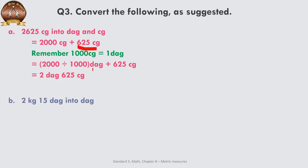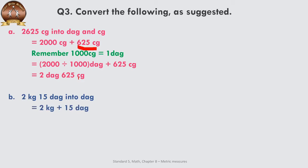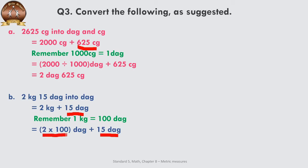Question 2: 2 kg 15 decagrams has to be converted into only decagrams. Kilogram is a bigger unit — bigger unit to smaller unit, we multiply. When we have two different units in one question, we separate them with an addition symbol. Just convert the kilogram part: 1 kg equals 100 decagrams, so 2 kg becomes 2 × 100 = 200 decagrams, plus 15 decagrams already in decagrams. 200 plus 15 is 215 decagrams.